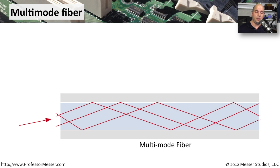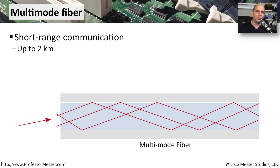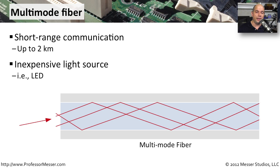You'll generally use two types of communications when using fiber. One is multi-mode communication. Multi-mode fiber is usually used inside of a building or across very small distances, usually two kilometers and shorter. It's also relatively inexpensive because the light source used on a multi-mode connection is often an LED, compared to a laser. It's called multi-mode because when the light goes into the fiber, it may take different paths to get from point A to point B — it uses different modes, bouncing around inside the fiber, with every single photon potentially taking a different path.